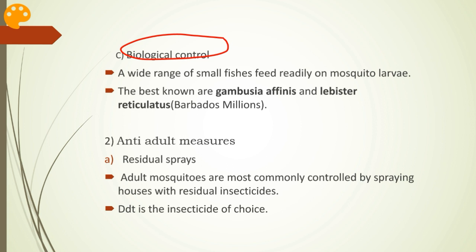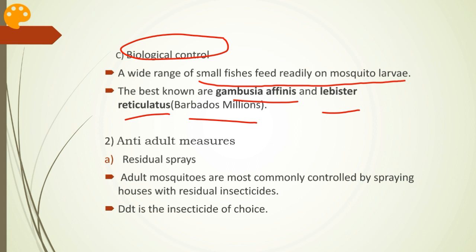Coming to biological control: a wide range of small fishes feed readily on mosquito larvae. The best known are Gambusia affinis and Labeo reticulatus, also known as Barbados million fish. These fish can be used in burrow pits, sewage oxidation ponds, ornamental ponds, farm ponds, etc. In recent years there has been a revival of interest in biological control through the use of fish. However, it is recognized that biological control can be effective only when used in conjunction with other methods — when used alone, it is not effective.